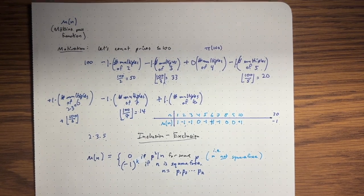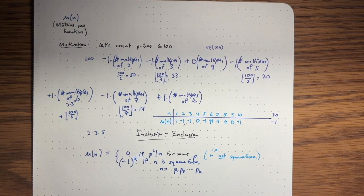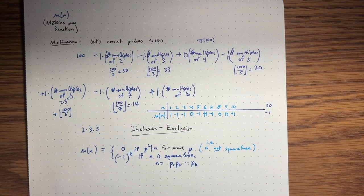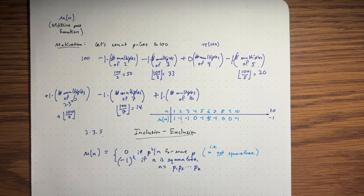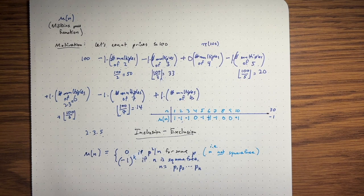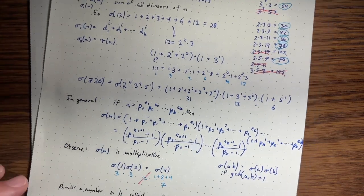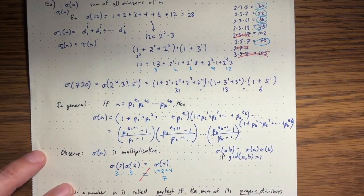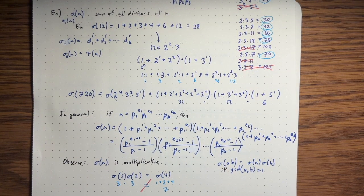This Möbius mu function is quite important — it appears in Möbius inversion and in the study of the Riemann zeta function, which is the subject of the Riemann hypothesis. In the next lecture, we'll classify all even perfect numbers, using the key ingredient that sigma(n) is a multiplicative function.